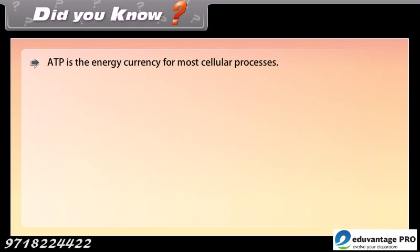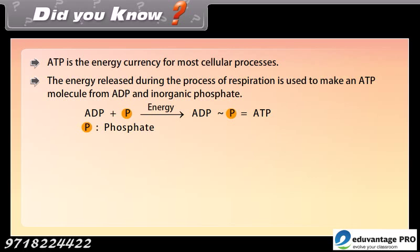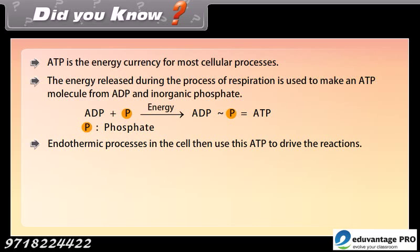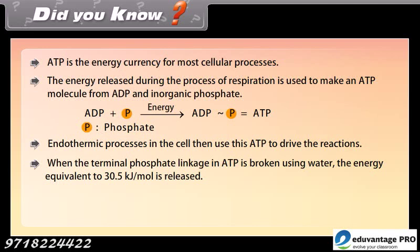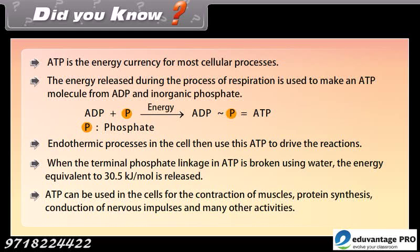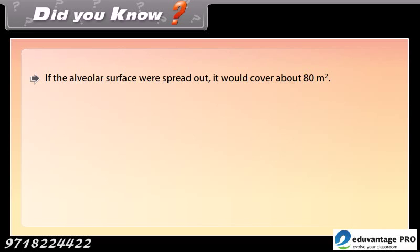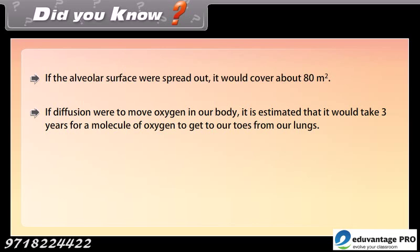ATP is the energy currency for most cellular processes. The energy released during respiration is used to make an ATP molecule from ADP and inorganic phosphate. Endothermic processes in the cell use this ATP to drive reactions. When the terminal phosphate linkage in ATP is broken using water, energy equivalent to 30.5 kJ per mol is released. ATP can be used in cells for the contraction of muscles, protein synthesis, conduction of nervous impulses, and many other activities. If the alveolar surface were spread out, it would cover about 80 square meters. If diffusion alone were to move oxygen in our body, it is estimated that it would take 3 years for a molecule of oxygen to travel from our lungs to our toes.